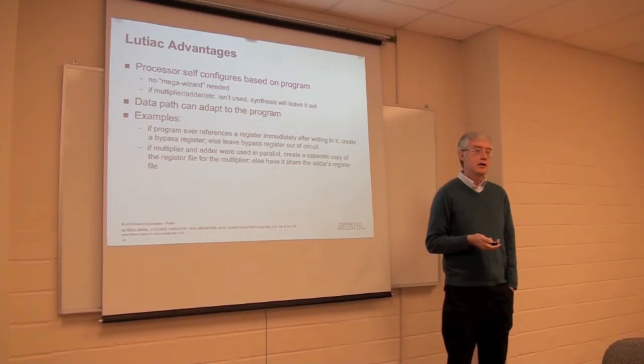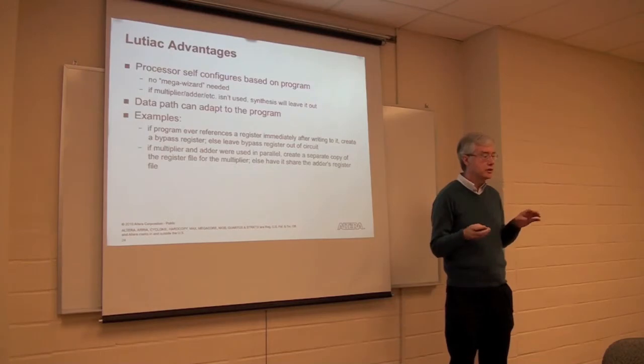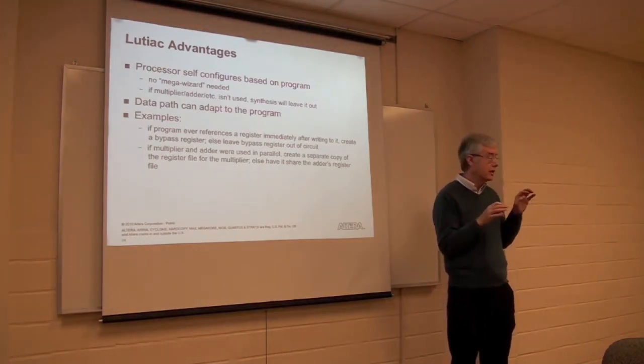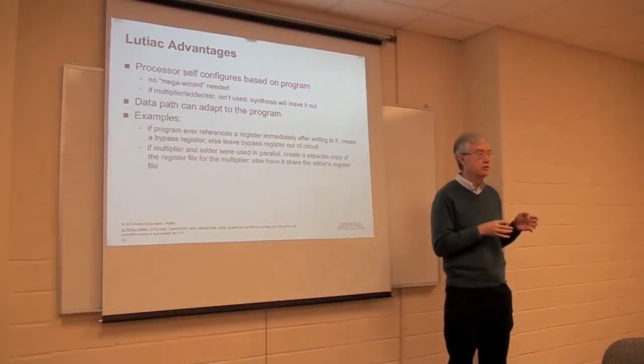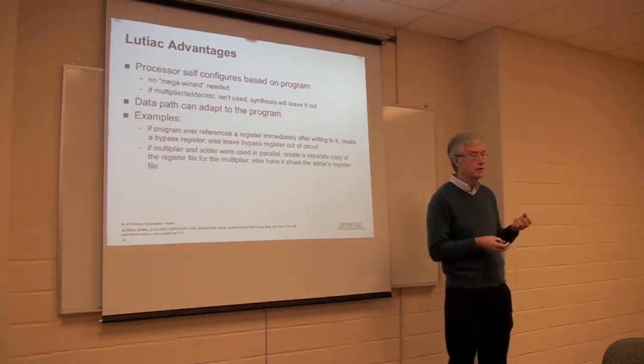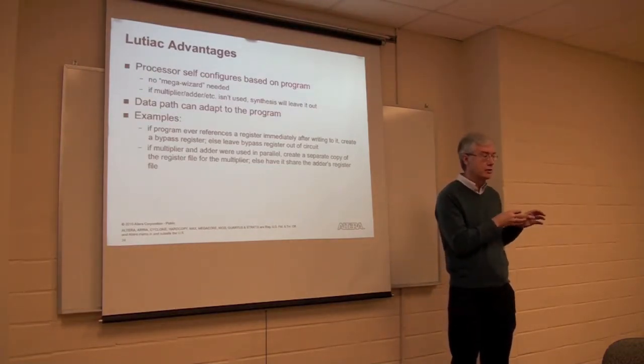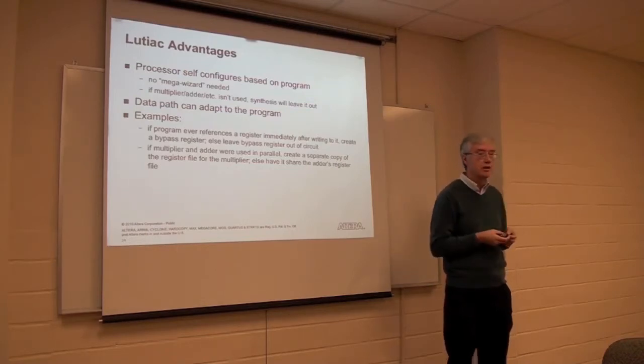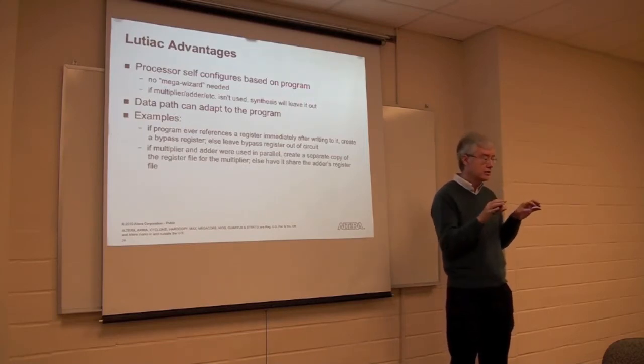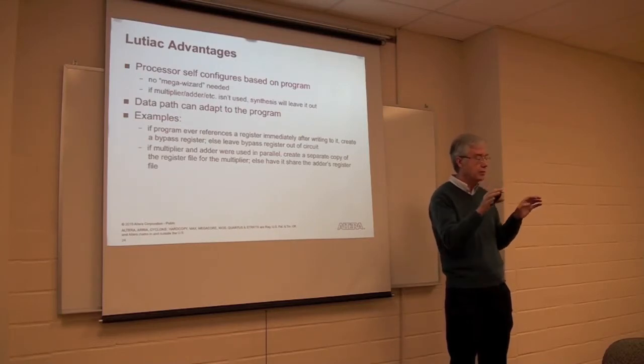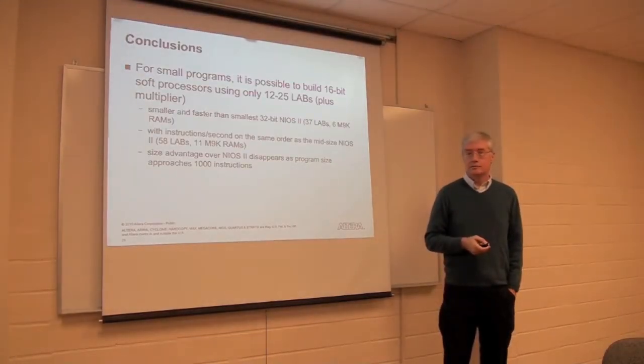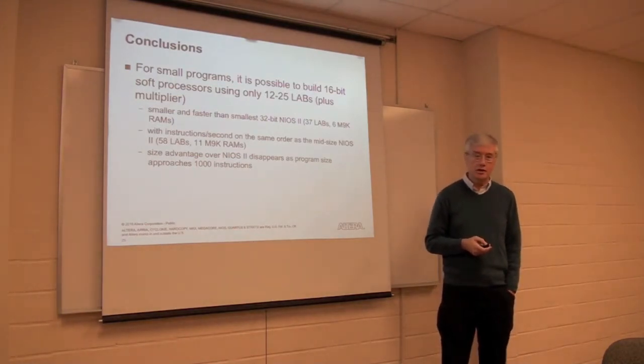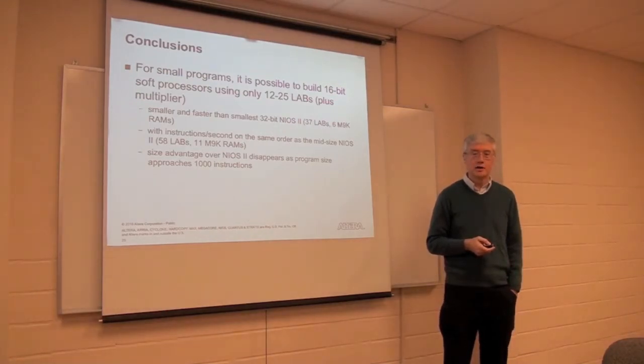The data path can also adapt to your program in ways that might be a little surprising. So Jason's example of a bypass register, if an instruction tries to access the value of a register that was written to in the previous instruction, that causes a problem. Because everything is pipelined, that value hasn't actually been written to the register yet. So what you normally do is you produce something called a bypass register, which saves the value of the last thing written by your previous instruction. And if you want to see it immediately, then you get it from the bypass register rather than the real register set. Now, because the data path can see your program, it can immediately tell whether you've ever actually done this in your program. And if you have, then it does have to put in the bypass register into the data path. But if it can see that you've never done this, then it can leave the bypass register out, and that makes the program smaller.